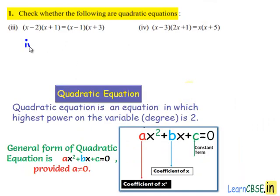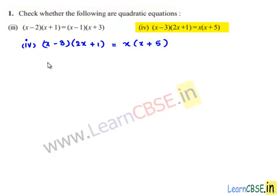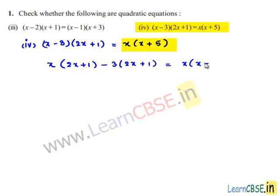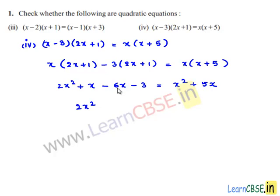Coming to the fourth bit, which is (x minus 3)(2x plus 1) equals x(x plus 5). On the left hand side we have (x minus 3)(2x plus 1), which can be written as x times (2x plus 1) minus 3 times (2x plus 1). Expanding: 2x squared plus x minus 6x minus 3.